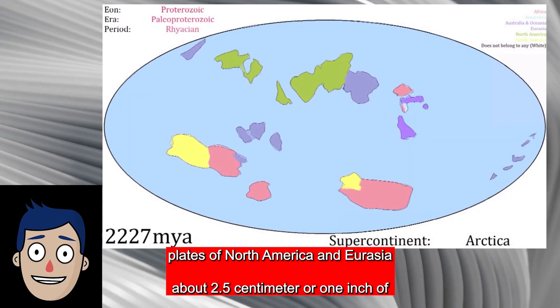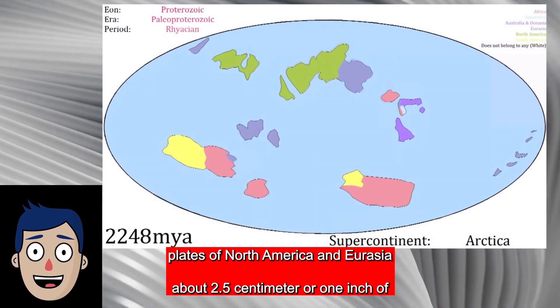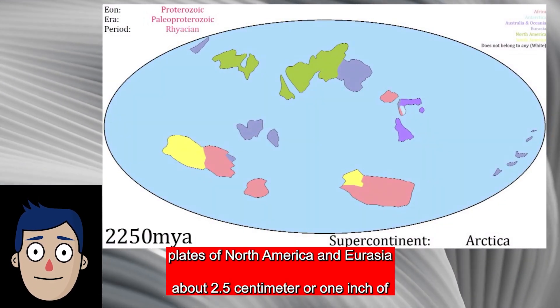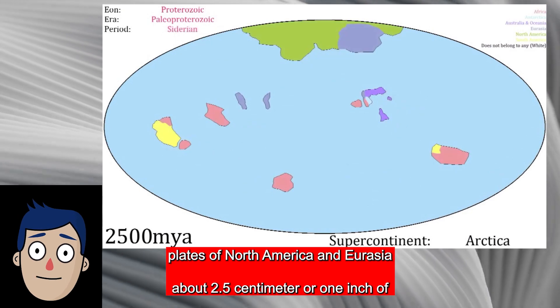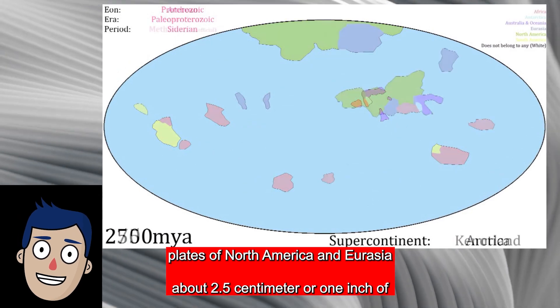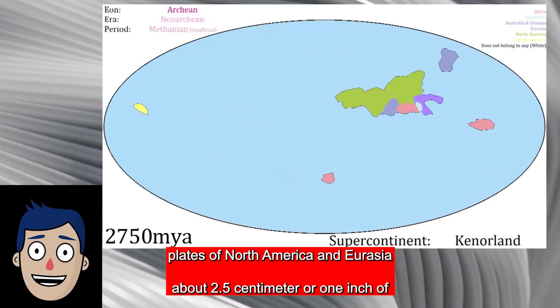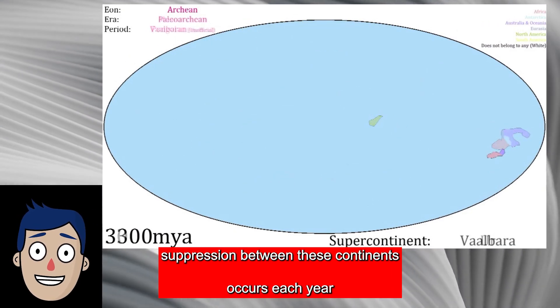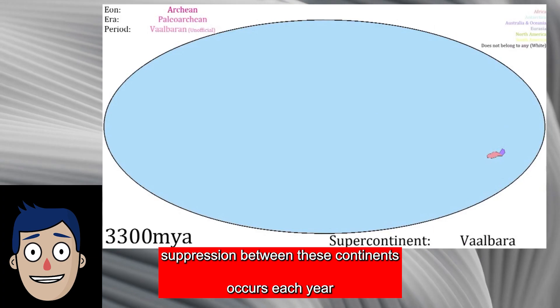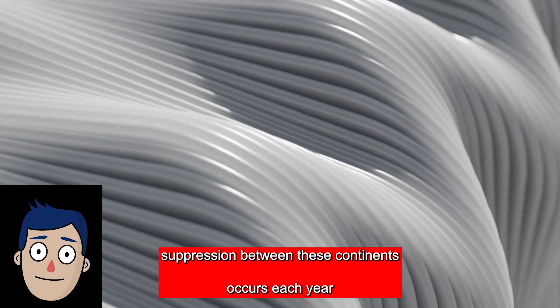The Mid-Atlantic Ridge divides the tectonic plates of North America and Eurasia. About 2.5 centimeters, or one inch, of separation between these continents occurs each year.